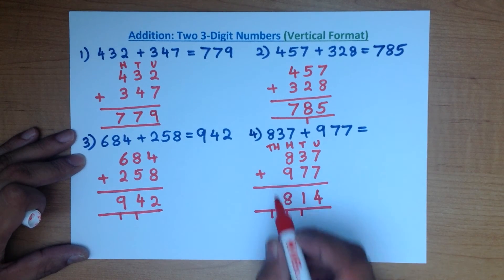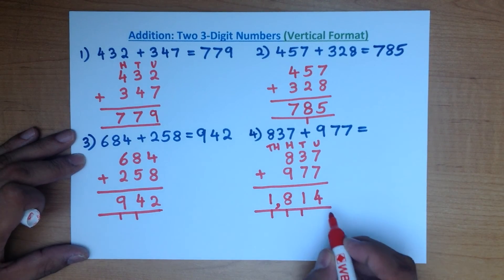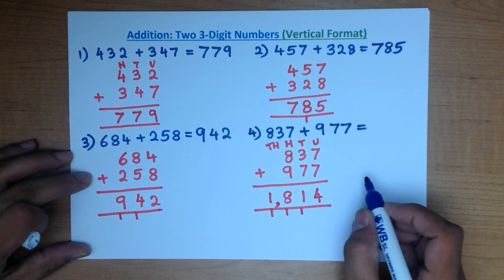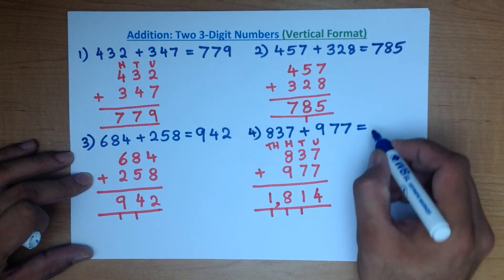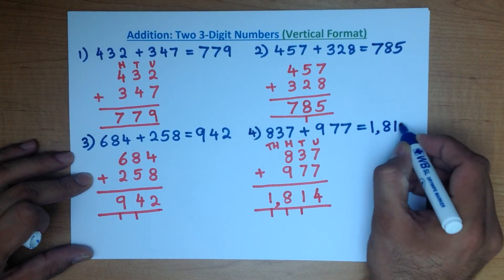There are no thousands there, no thousands there. There's only one here. And we can put a little comma to differentiate, to separate the thousands from the hundreds. So 837 plus 977 is 1,814.